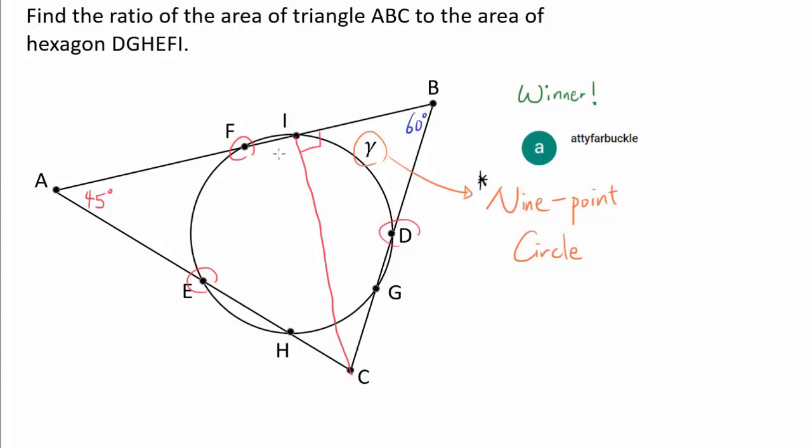Another way of saying it, BIC is a 90-degree angle, BHC is also a 90-degree angle, and AGB is also a 90-degree angle. So we have 3 midpoints and 3 feet of the altitude.